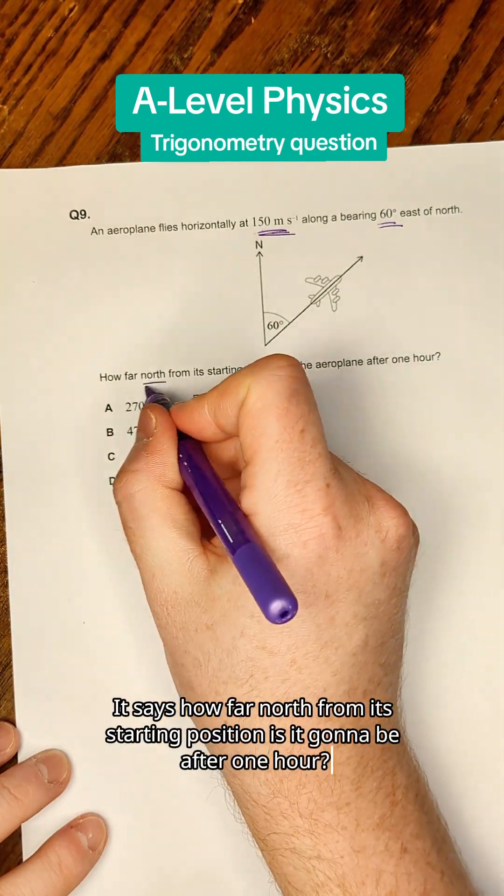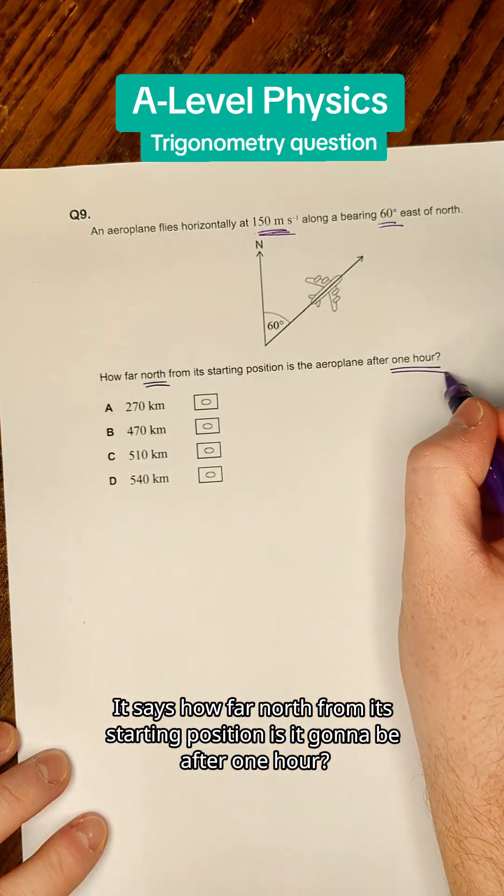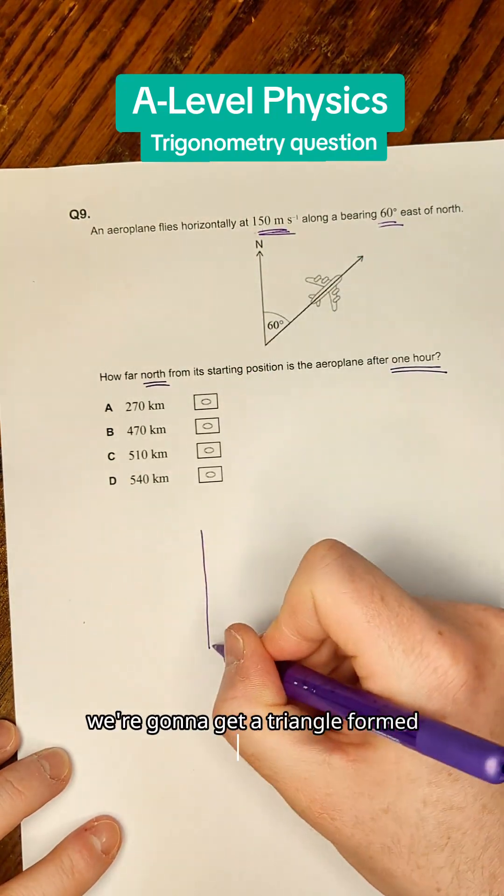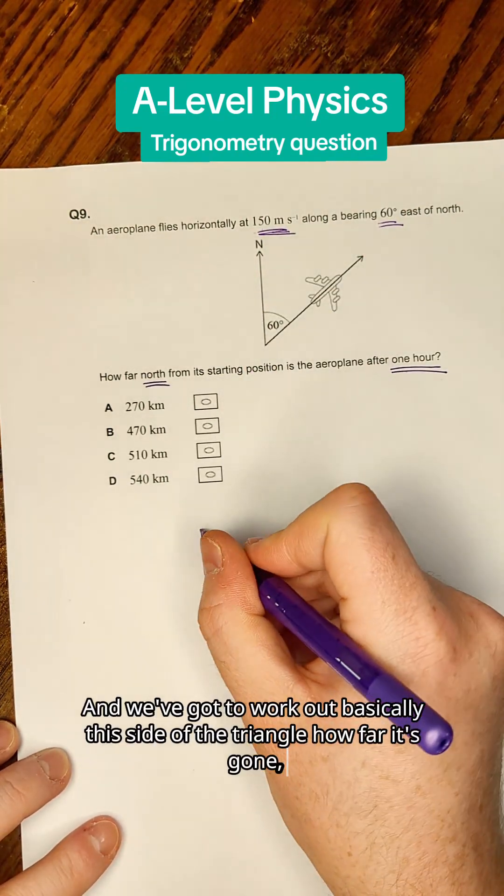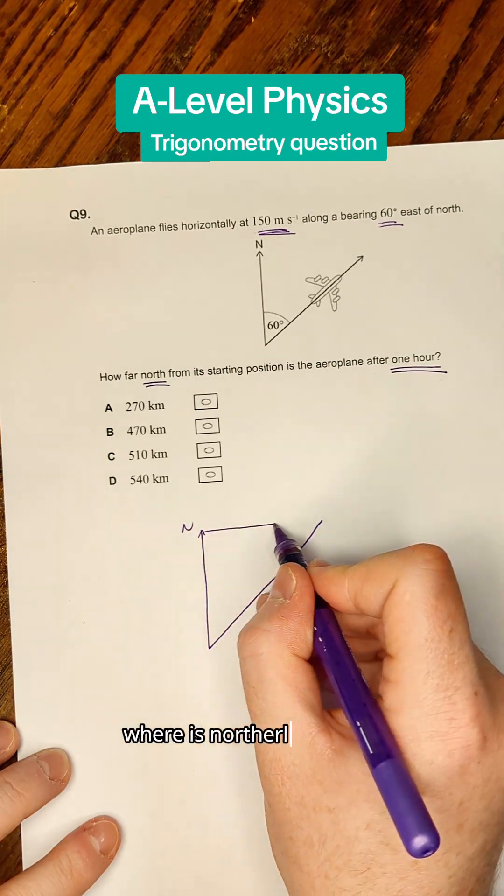Horizontally refers to not dipping or increasing in height. The question asks how far north from its starting position after one hour. We're going to get a triangle formed here, and we need to work out this side of the triangle - how far it's gone in the northerly direction.